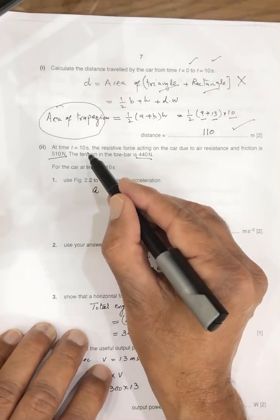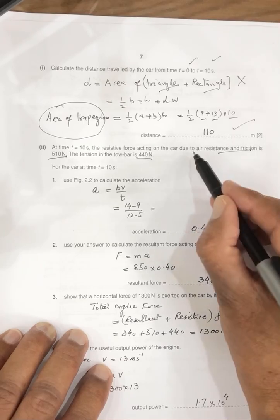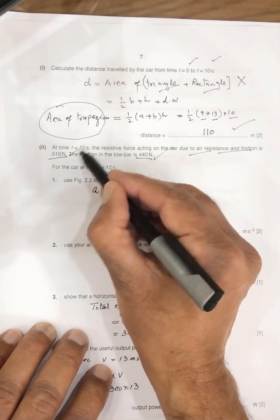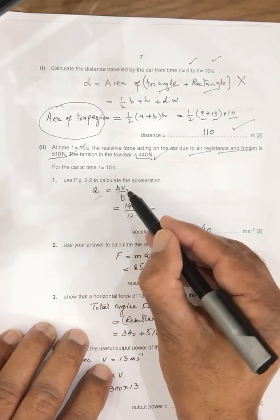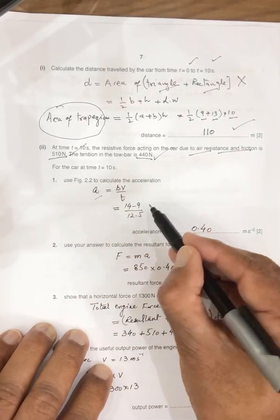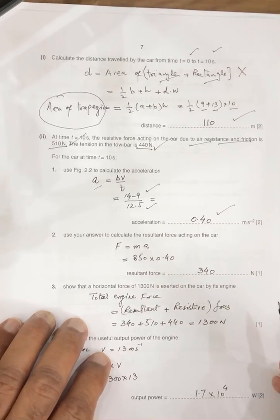Next question is at 10 second, resistive force of the friction and the air resistance given, 440, 510. Question is calculate the acceleration. Again, from the graph, acceleration is change in velocity divided by time. So this is a change of velocity, this is a time taken, so answer 0.40.